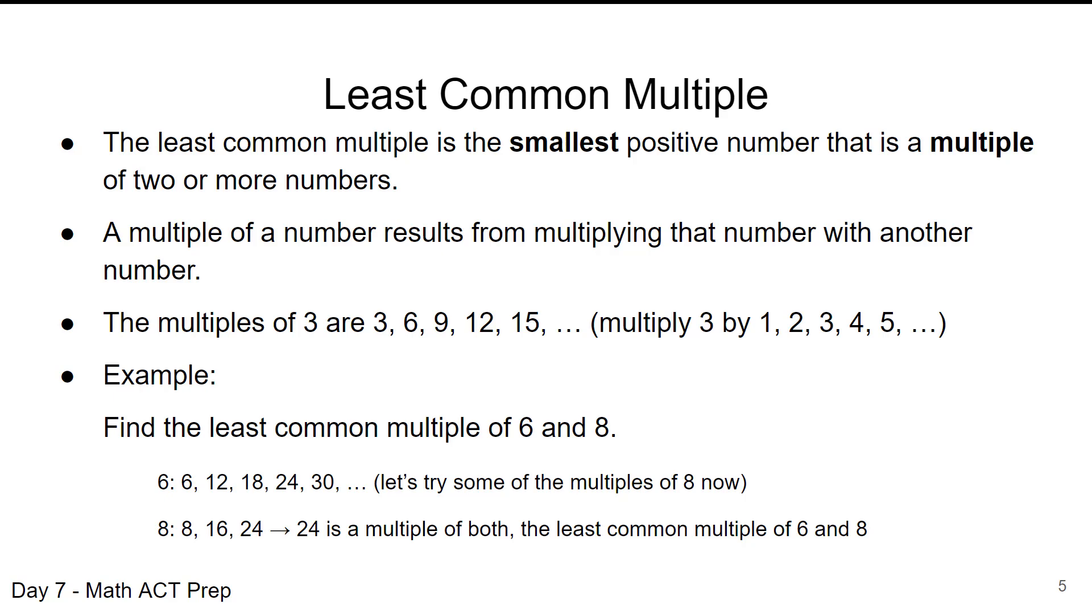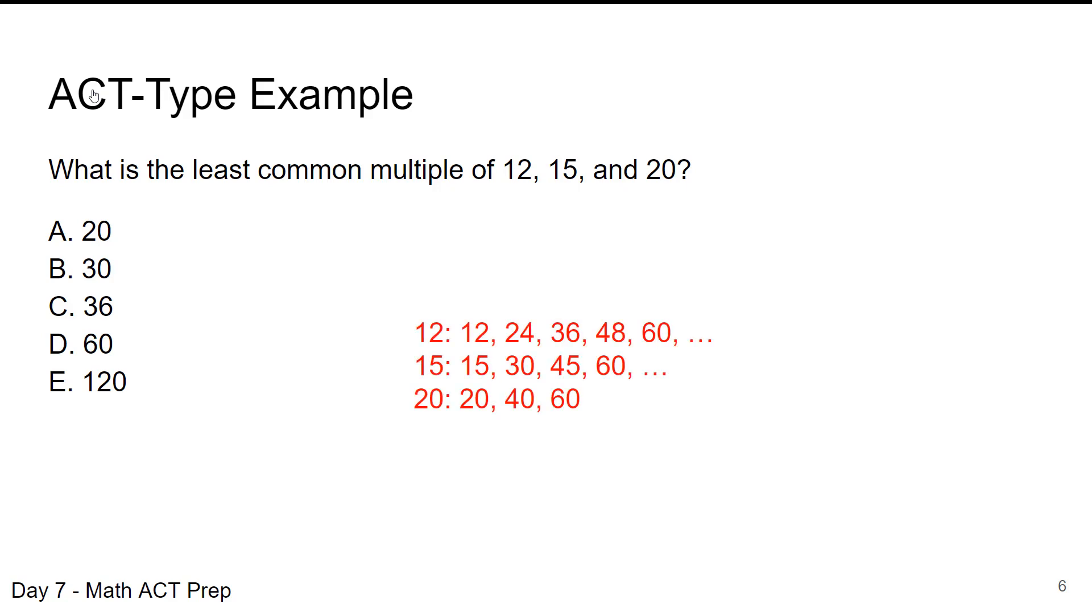So now let's take a look at an example ACT type question. Pause the video here and work this for yourself and then come back and we'll go through the answer. Okay, so we have to find the multiples of each of these numbers 12, 15 and 20. We find a series of these until we find the one that's the smallest number that they have in common and that appears to be 60. So our answer is going to be answer choice D, 60.